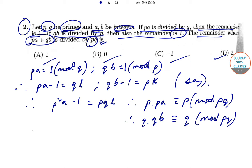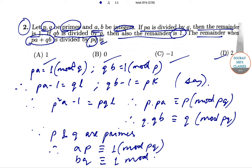So now we can write that since P and Q are primes, therefore AP will be congruent to 1 mod PQ, and BQ will be congruent to 1 mod PQ.